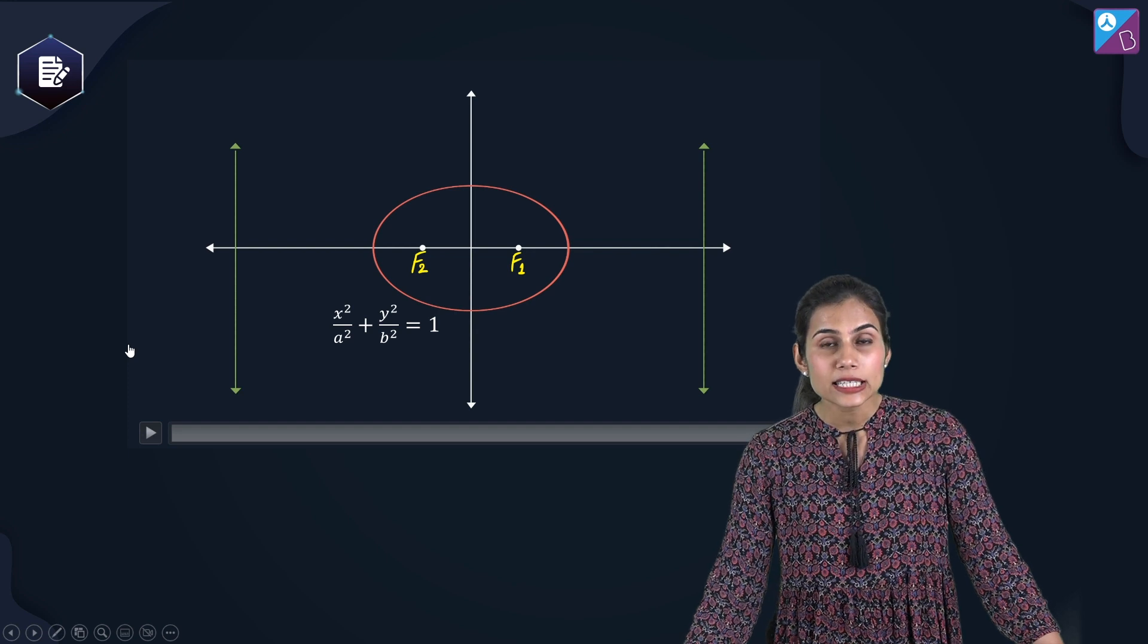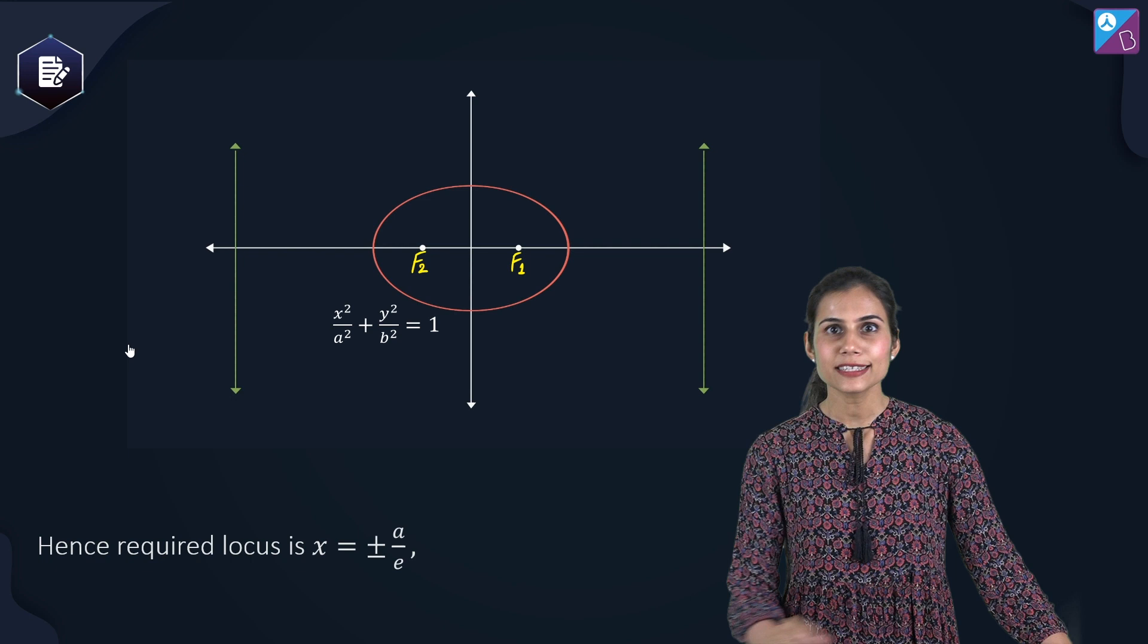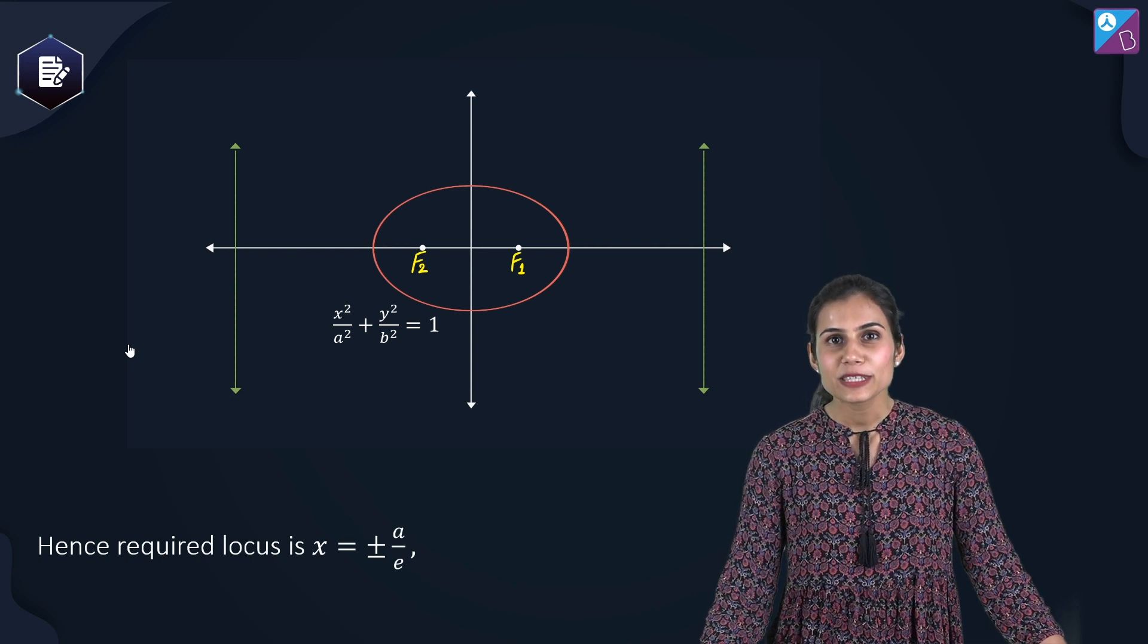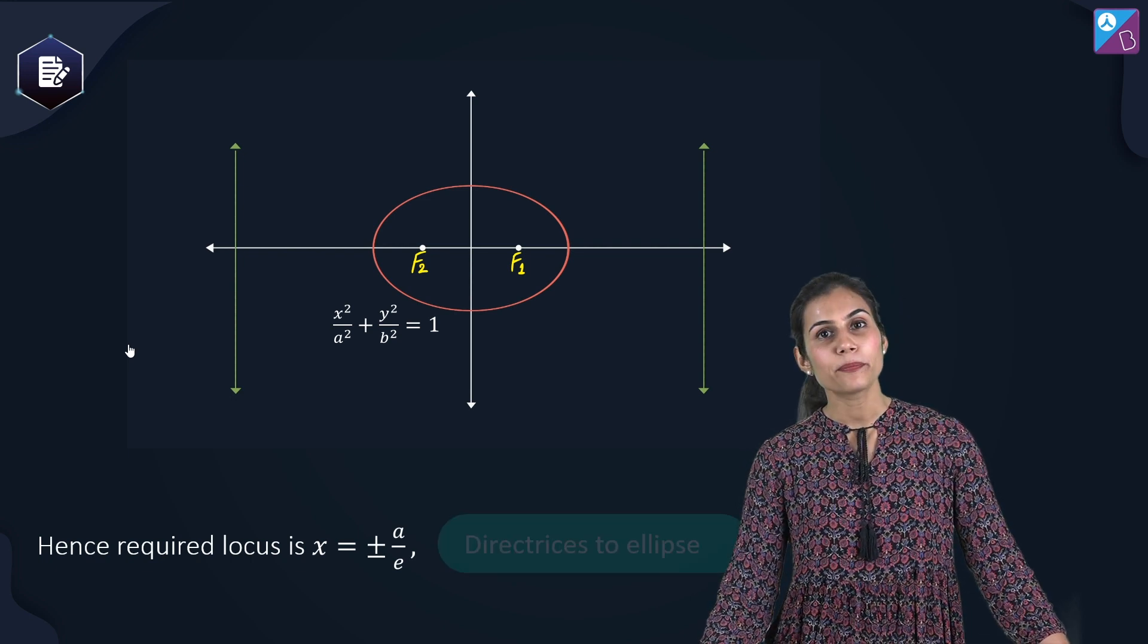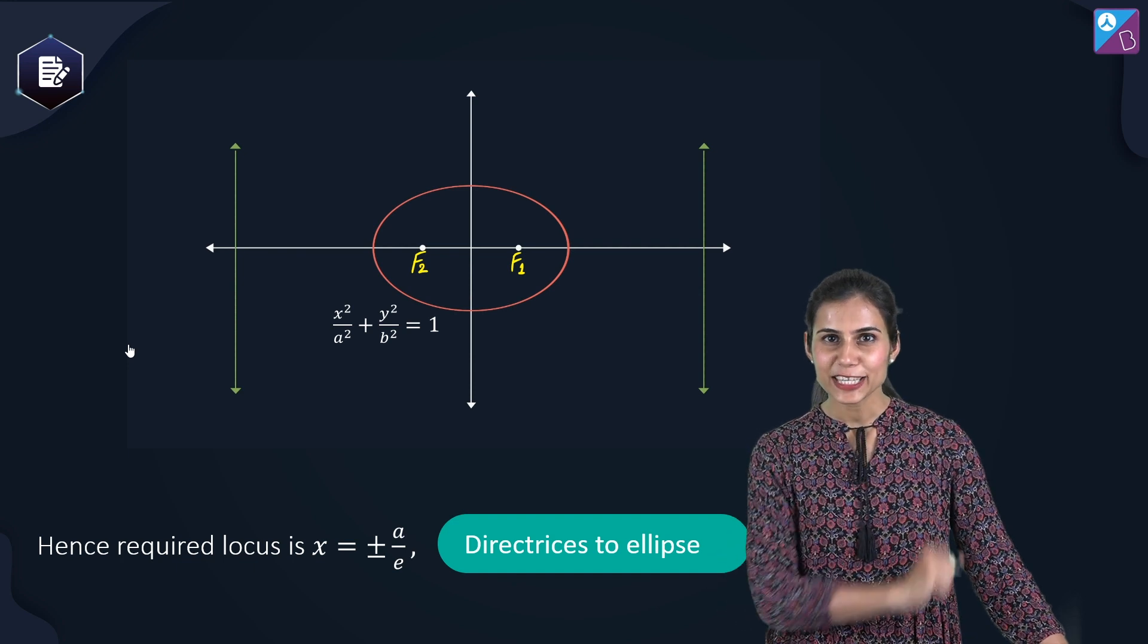That means the answer that we had obtained previously is absolutely correct. The locus is coming out to be x equals plus minus a by e which represents the pair of directrices for my given ellipse sitting in option D.